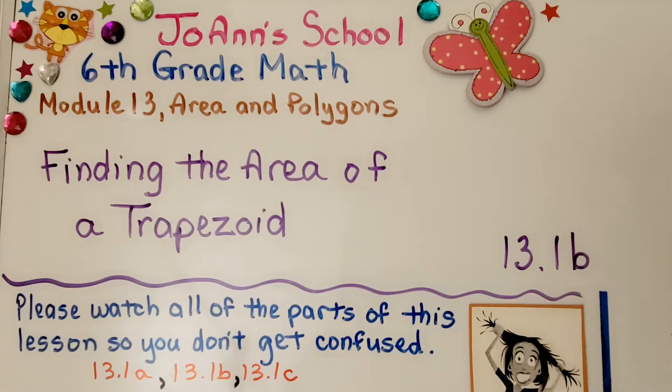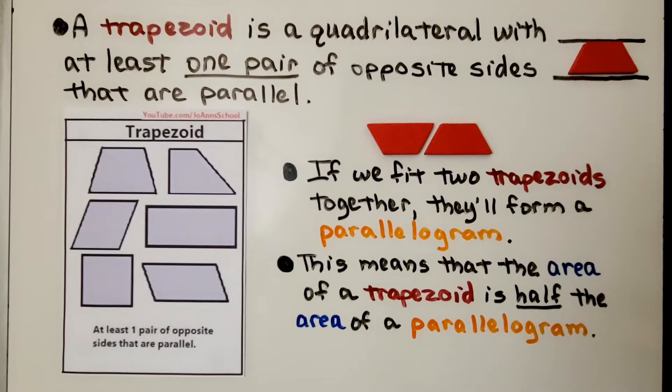Lesson 13.1b, Finding the Area of a Trapezoid. A trapezoid is a quadrilateral with at least one pair of opposite sides that are parallel.